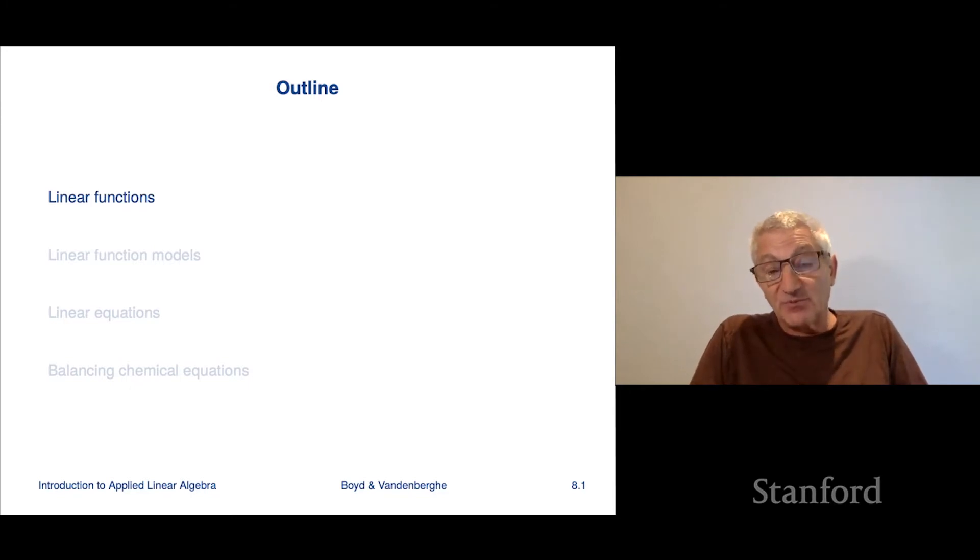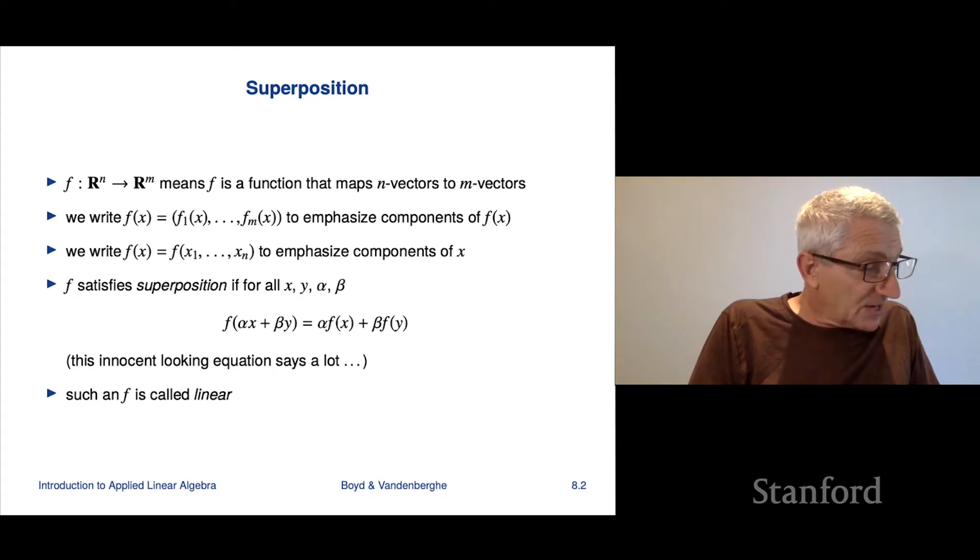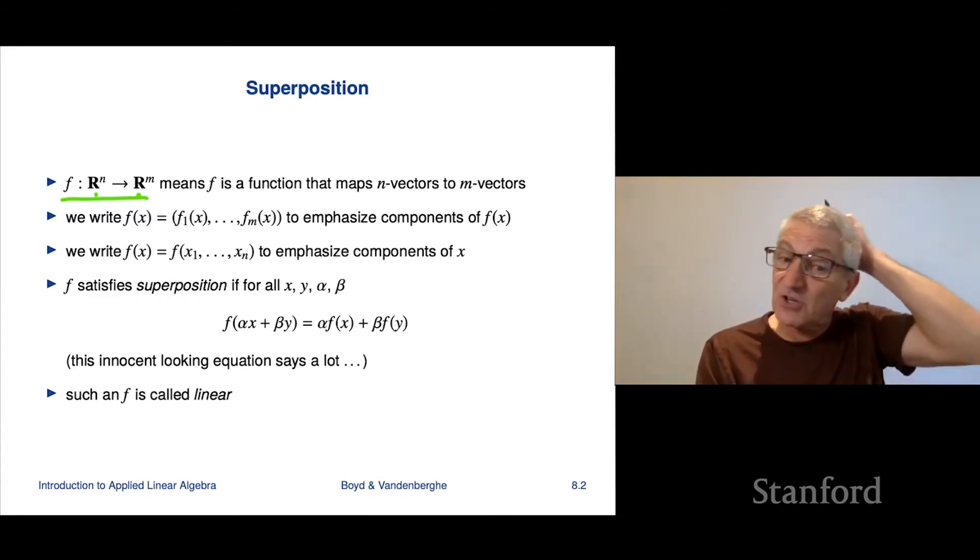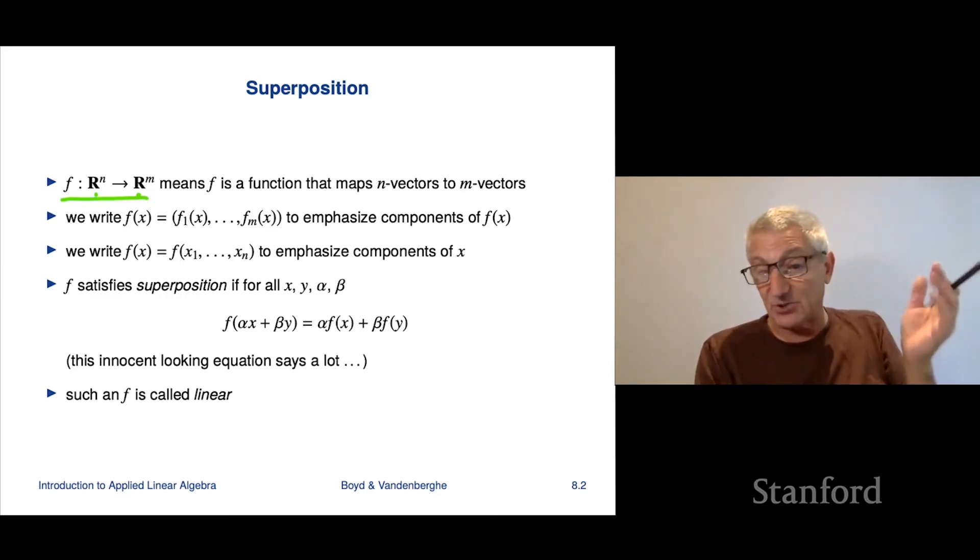Now, we had looked at linear functions before, but that was a mapping from a vector to a scalar. We're now going to look at functions that map vectors to vectors. So this notation f colon R^n to R^m is complicated but pretty universal. And it means that f is a function that maps an n-vector—the first thing tells you what it takes as an argument or input. And the second one, R^m, tells you that's the set of m-vectors. And it says that what f returns or gives or yields or its output is an m-vector. So this just says it's a function that maps n-vectors to m-vectors.